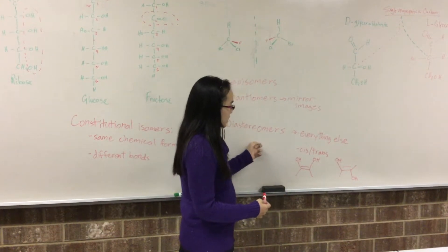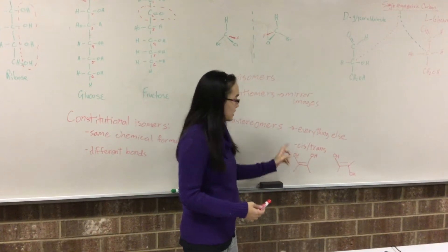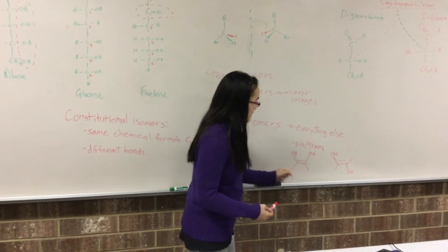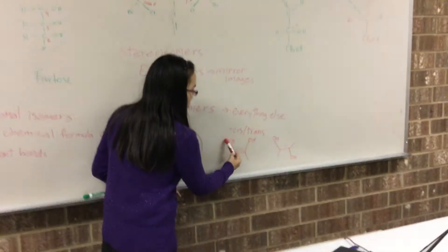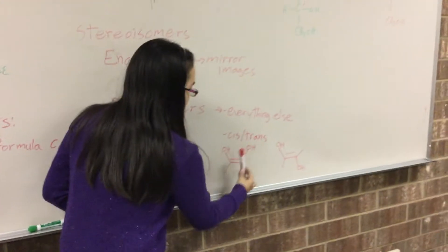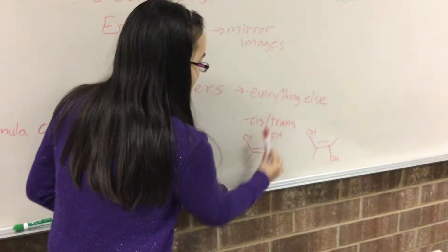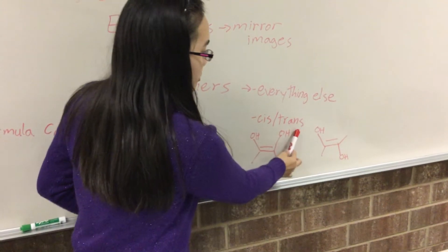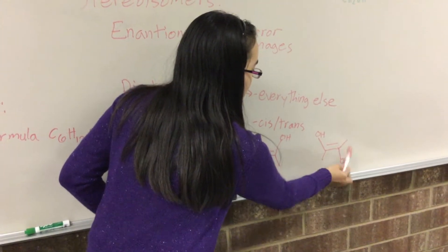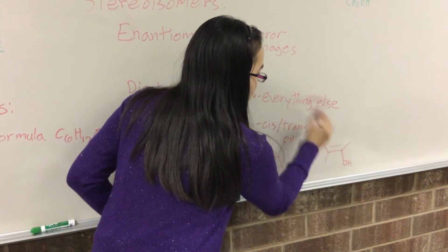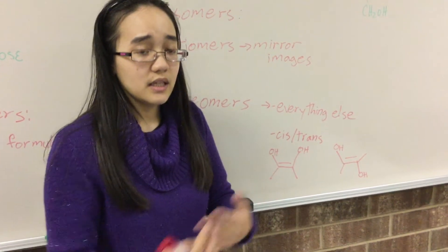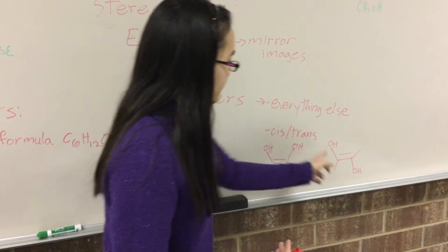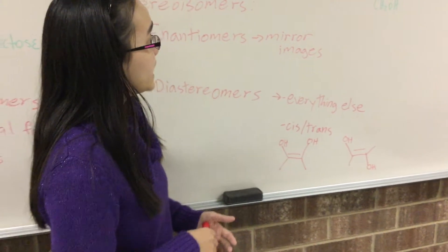She also gave an example of diastereomers: cis and trans. Cis, you're on the same side—these two groups right here are on the same side as each other. For trans, these two groups here, they're on different sides of each other. Cis same side, trans different side, and that is diastereomers.